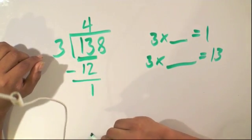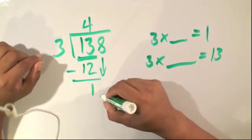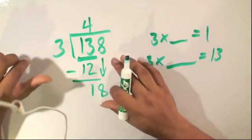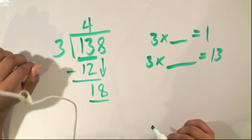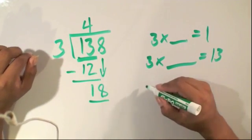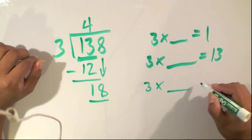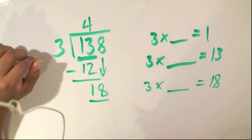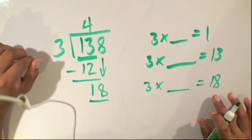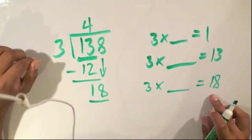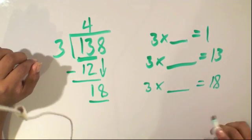Now, our next step is to bring down the 8, so now we can work with the number 18, and we'll ask the same question. 3 times what number gives me 18? Now, fortunately, with this, we can actually get an exact result of 18, and that number is 6.